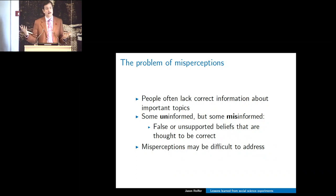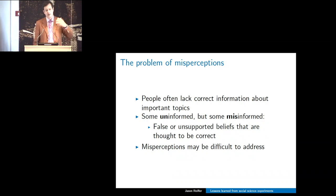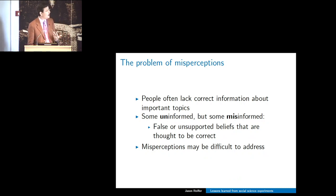Partisan identity is really important in the United States. When people are given information that runs counter to their political predispositions, it is really challenging. What we think is going on at the mechanism level is that people are coming up with all the reasons why that corrective information is wrong and why what they already believe is correct—and that process reinforces their ultimate beliefs. We thought we had a simple one-off study about why Americans hold continuing misperceptions about WMDs in Iraq, but we've still been doing this work for ten years.